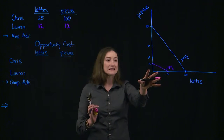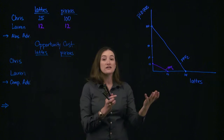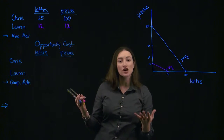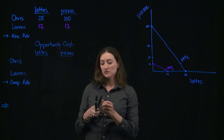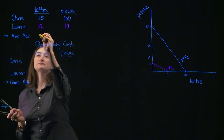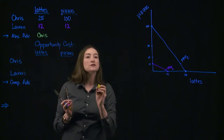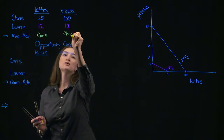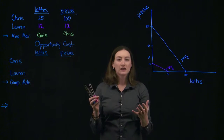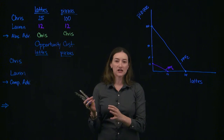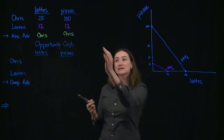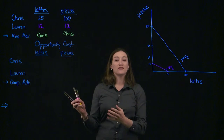Notice that Lauren's PPF is completely inside Chris's PPF. That's one way of showing she's not as productive overall — Chris can produce more of both. The term we use for that is absolute advantage. Chris has an absolute advantage in the production of lattes because 25 is more than 12, and he has an absolute advantage in the production of pizzas because 100 is more than 12. But when we decide how to think about production, it's not enough to think about absolute advantage — we should be thinking about comparative advantage, because even though Chris has an absolute advantage, he doesn't have a comparative advantage in both goods.